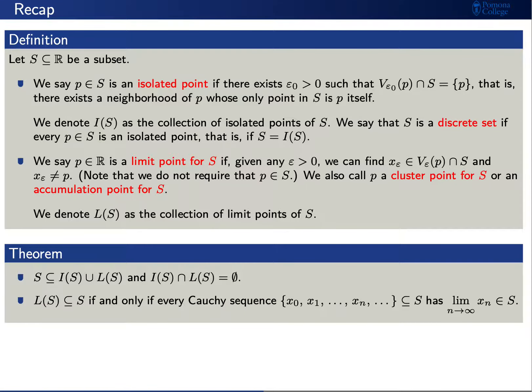We found before that S is contained in the union of I(S) and L(S). That is, every point of S is either an isolated point or a limit point. Moreover, no point is contained in both — that is, there is no point p that is both an isolated point and a limit point.